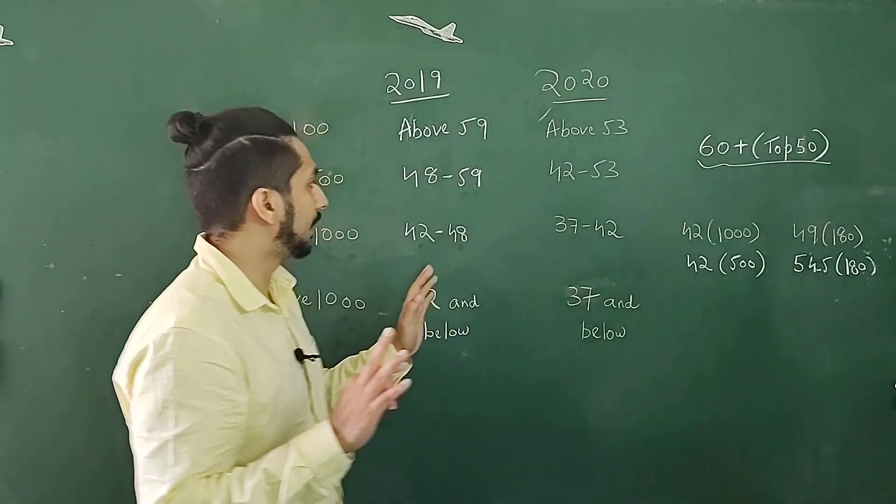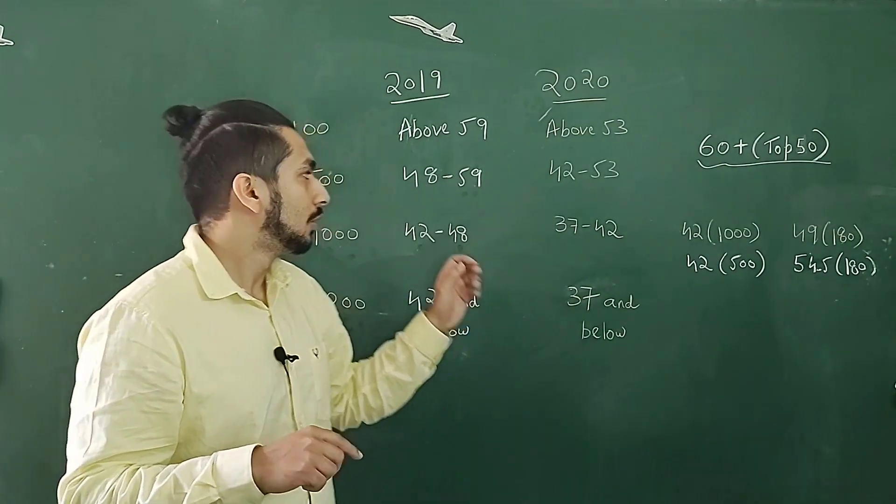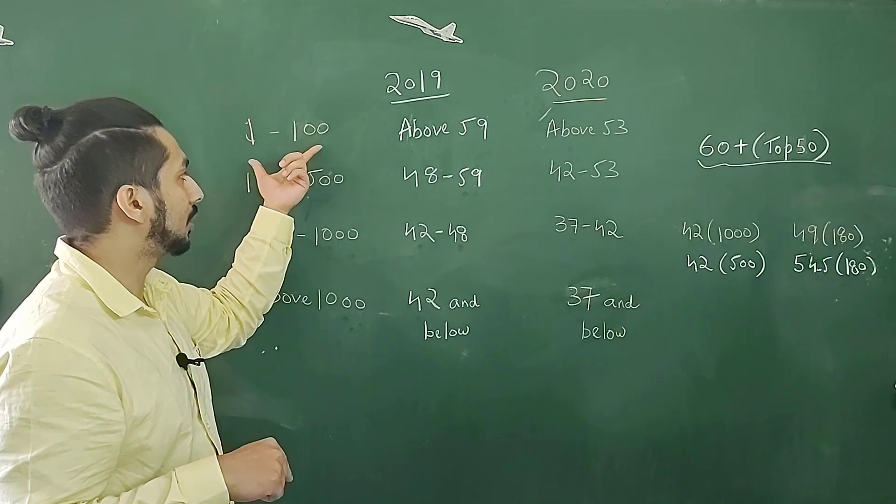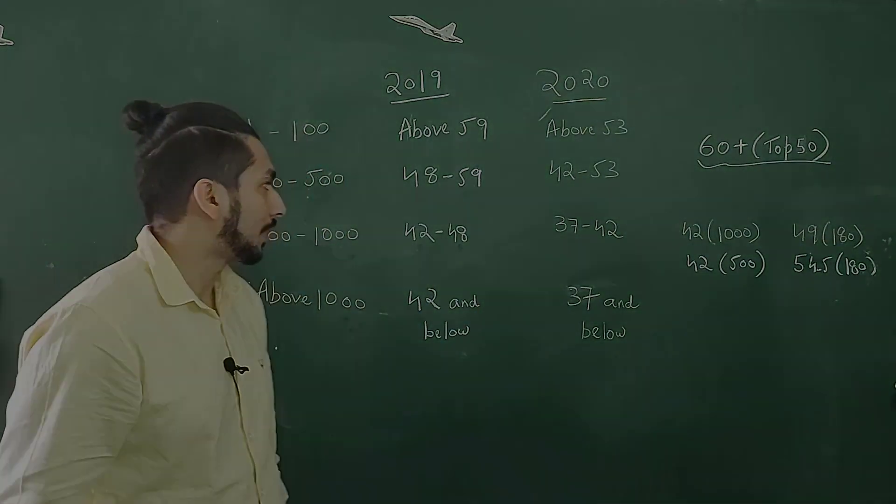And if you want a rank between 100 to 500, I would say aim for 50 plus. So if you want a rank between 100 to 500, aim for 50 plus. If you want a rank between 1 to 100, I would say on a safer side you aim for 60 plus.